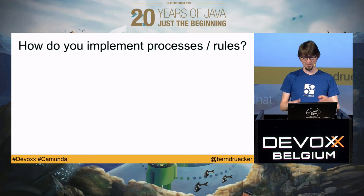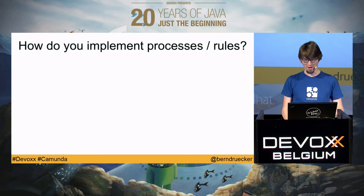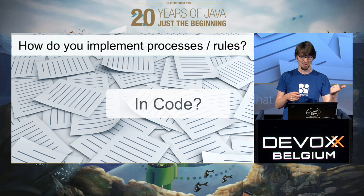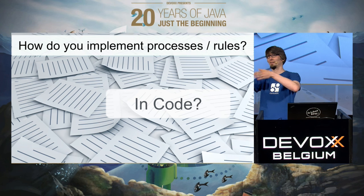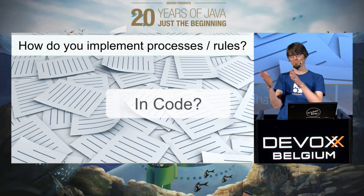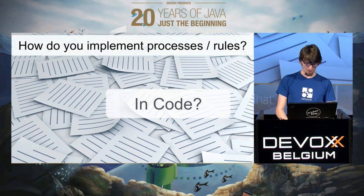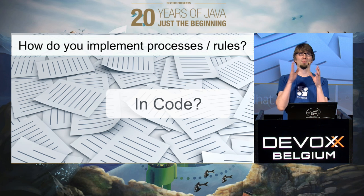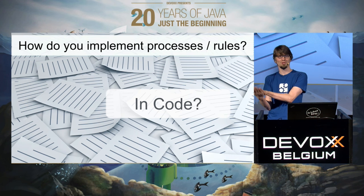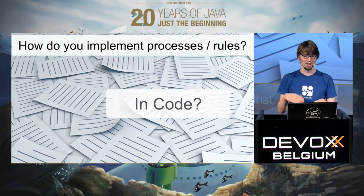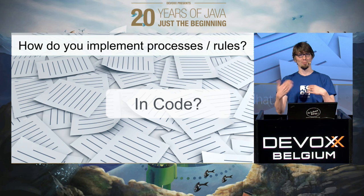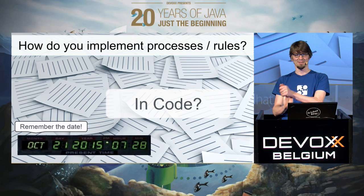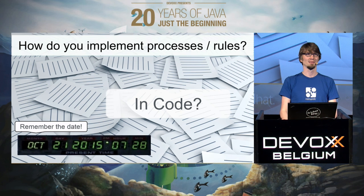If you look at current companies, how do they implement processes? What you see a lot is they're coding it — coding your own process engine like a state machine, or an order table with an order state attribute as an integer to track which state the order is in. The problem is you don't see that process, and you're normally not able to change it because you have to understand how it works today, and that's pretty hard to do in current code. We're currently in 2015, so coding processes hard-coded or doing your own process engine doesn't make sense.